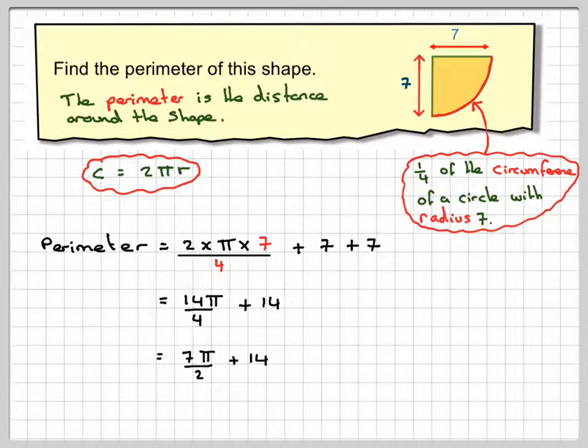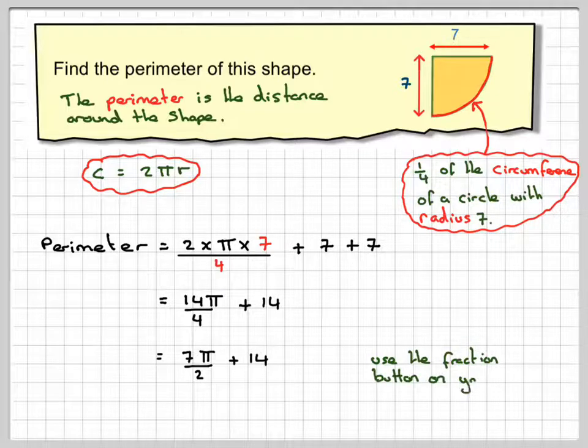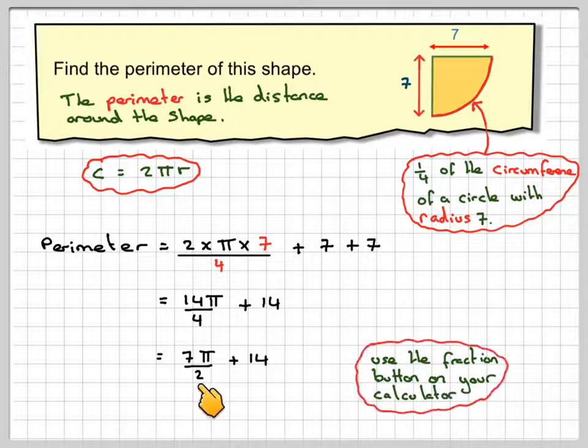Now this bit here you should use the fraction button on your calculator. So enter the fraction button, put 7π and then 2 in the bottom, and plus, move forward, and then add 14. And you're going to get an answer, so 24.995.